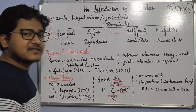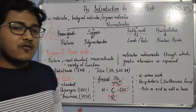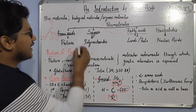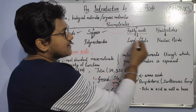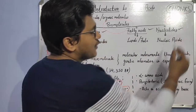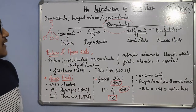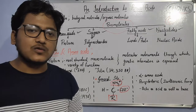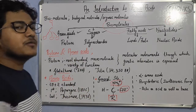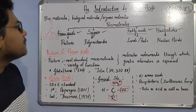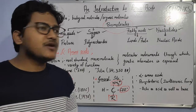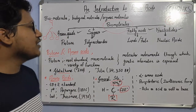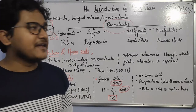Moving on to biomolecules — in biological systems or inside living organisms, four major families of biomolecules are seen: amino acids, sugars, fatty acids, and nucleotides. Apart from these four, there are other biomolecules as well, but these are the four major ones. In plants also, we have a number of biomolecules and secondary metabolites which play a crucial role in defense and many other functions.